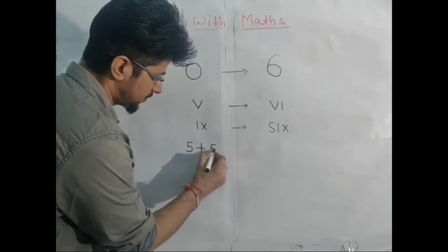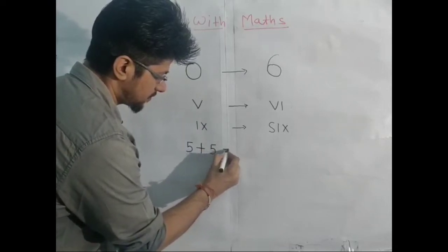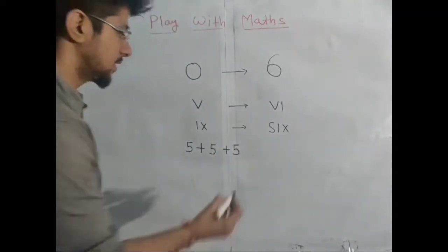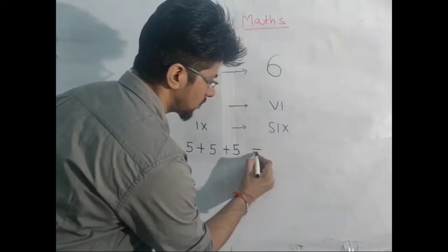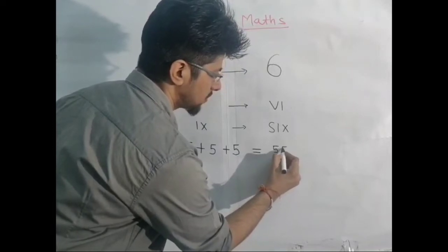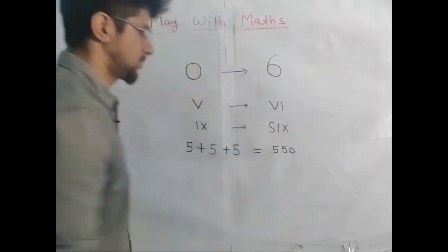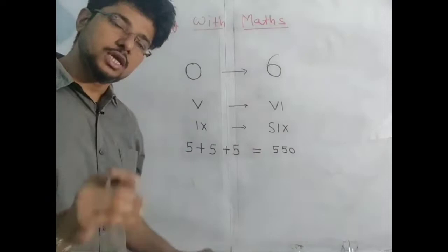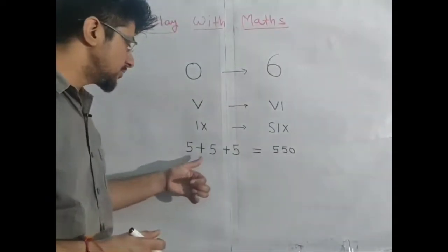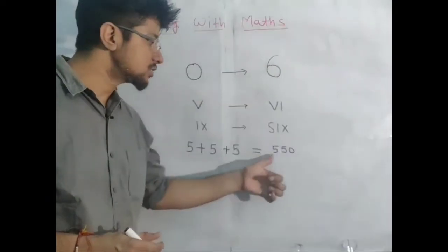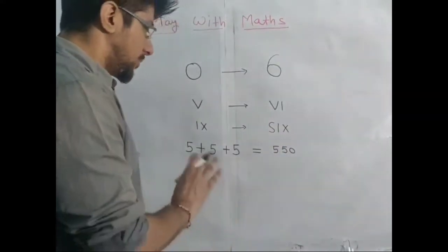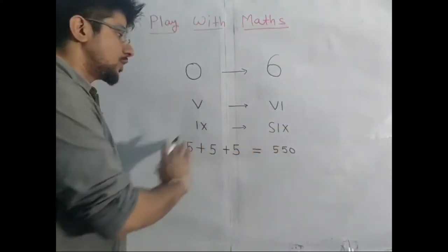Five plus five plus five equals fifty. Everyone will say this is a wrong equation because five plus five plus five is just fifteen, not equal to fifty. But you need to correct this equation.